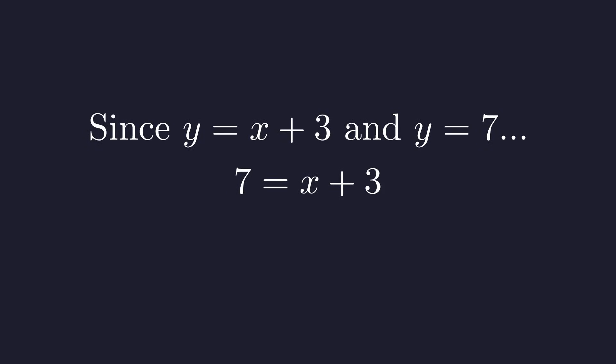So we have the equation 7 equals x plus 3. To get x by itself we just subtract 3 from both sides, and that gives us our solution: x equals 4.